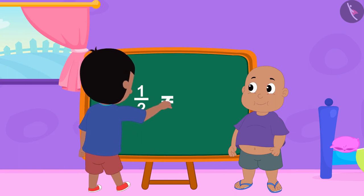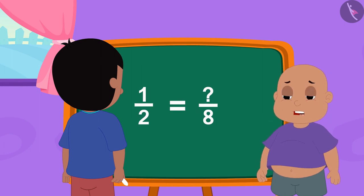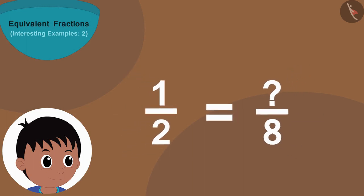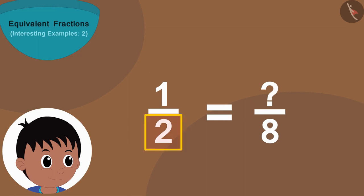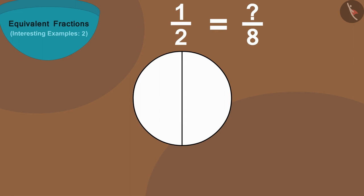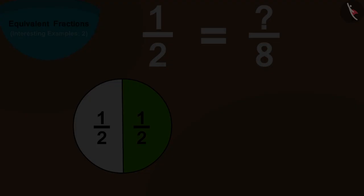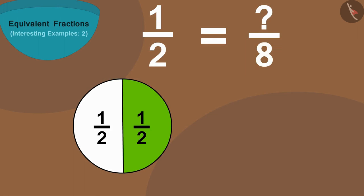Raju first wrote this fraction. Bablu started finding the fraction. Children, can you help Bablu? Raju wrote this fraction. Here the number two shows how many parts of a thing are created, and the number one shows that we took one of those two parts. Like if we divide this circle into two equal parts and fill color in one part, then we can write the colored part of the circle in the form of a fraction as one by two.